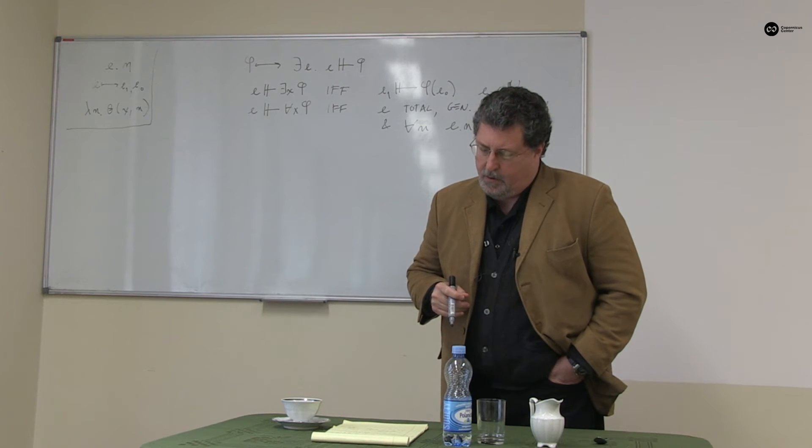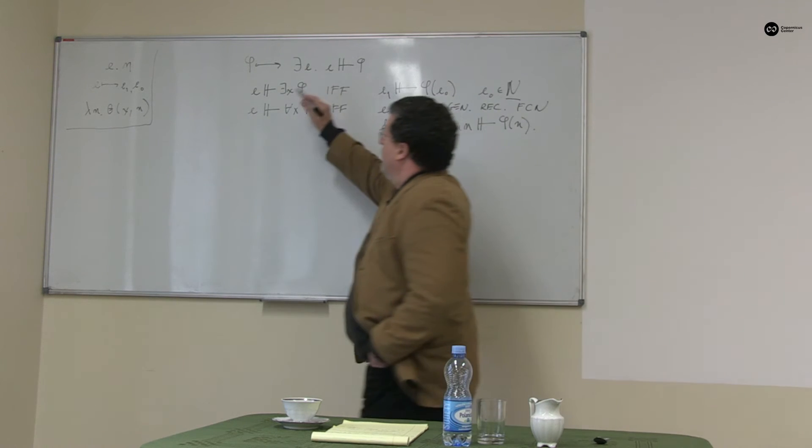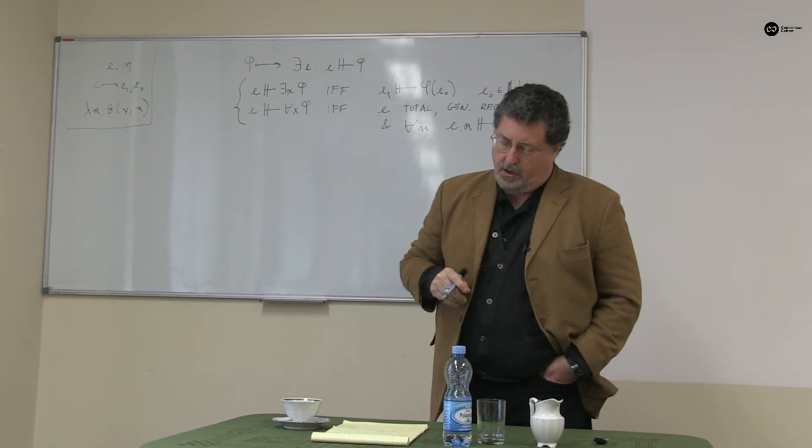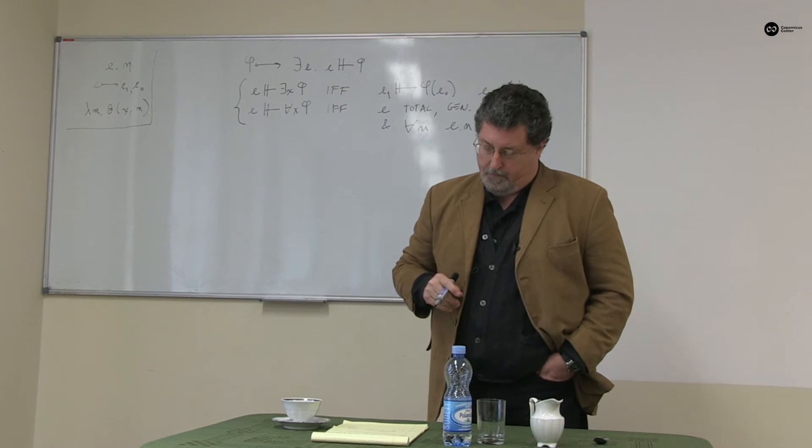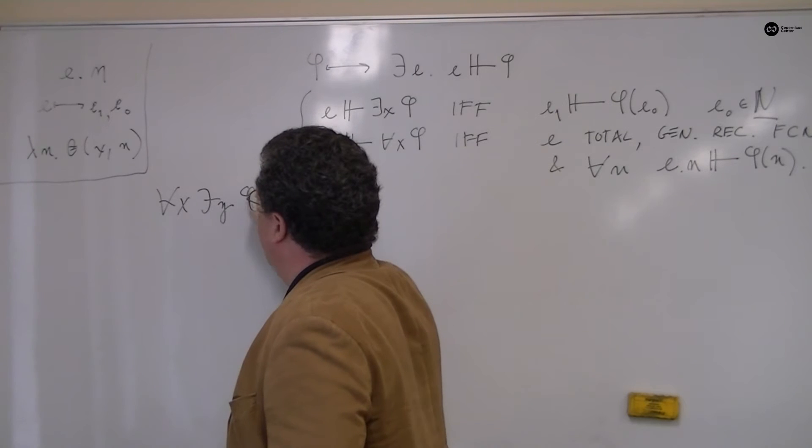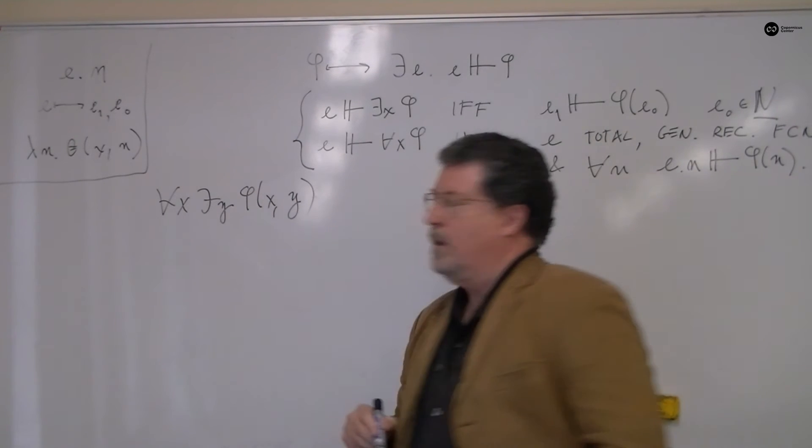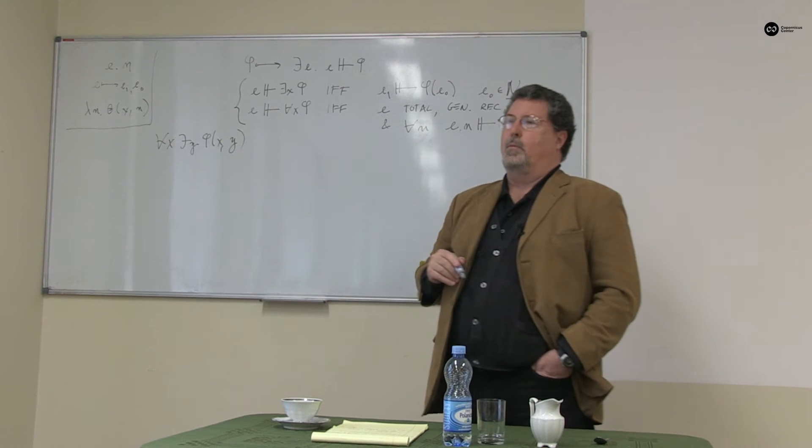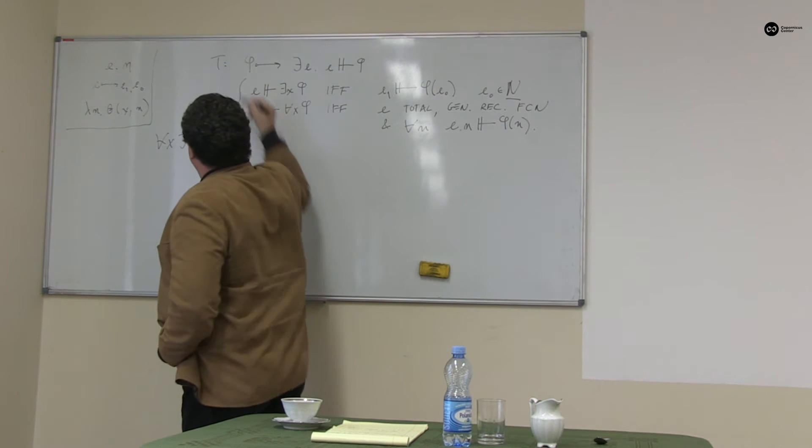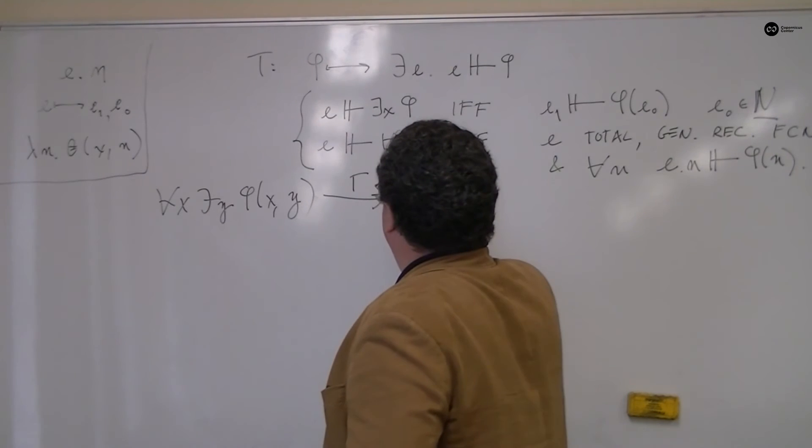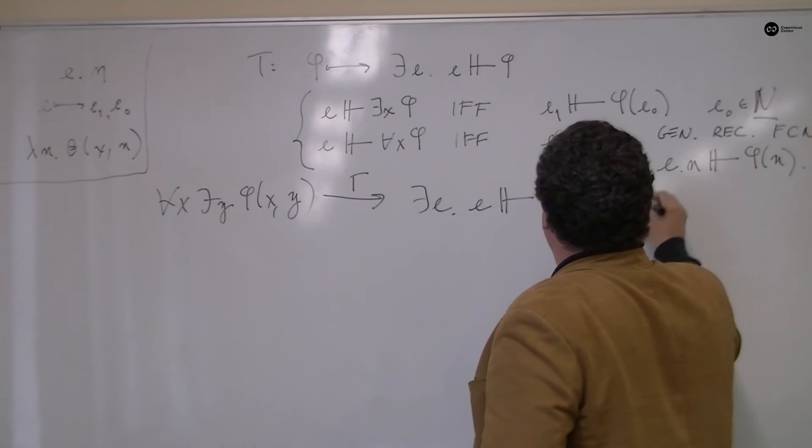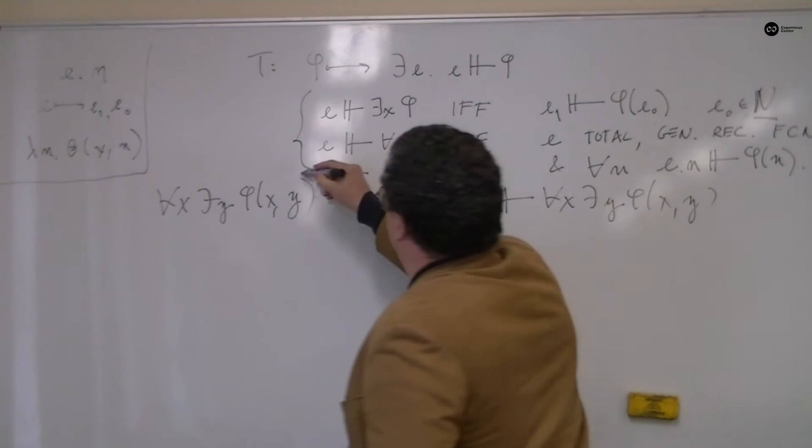And now I'm going to begin to show from this claim and this partial definition that Church's thesis as understood by intuitionists is true. So let's start out with the claim that phi, perhaps in parameters, defines a total relation over the natural numbers. For every natural number x, there's a natural number y such that phi xy. Then, by the t-scheme, it follows that there is a construction that constructs this parametrized expression. Let me draw a line here separating these.